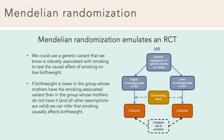In MR, if a particular genetic variant is robustly related to an exposure, people with that variant are effectively assigned a higher on average dosage of that exposure, and people without that variant are assigned a lower on average dosage. So if smoking causally affects birth weight, we can expect people with the particular genetic variant to have a higher rate of low birth weight than those who did not inherit it. And as with an RCT, because genetic variants are randomly assigned during meiosis, they should be unrelated to confounders.